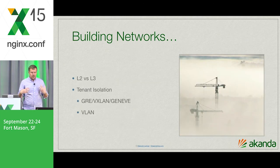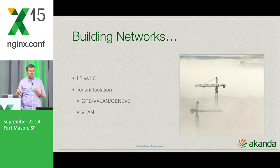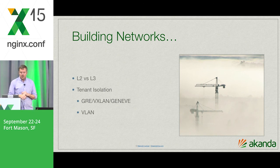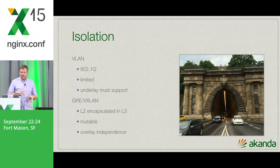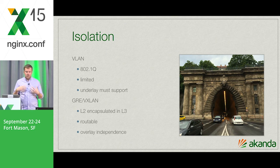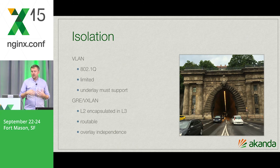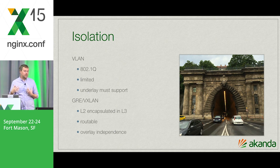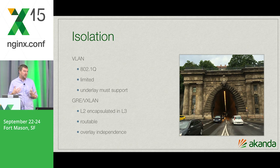OpenStack and Neutron in general allow you to build a number of different network topologies. You can consider layer two networks, but most people are building layer three centric networks — they're easier to manage and operate, and you don't run into the headaches of very large L2 domains. A lot of times they're supported with different types of isolation: GRE, VXLAN, GENEV. With VLAN, it's 802.1q, which requires a lot of setup and your underlay has to be aware of how VLANs are allocated. With Neutron you'll often see flat deployments or deployments based on VXLAN or GENEV, where you encapsulate the L2 packet into layer three or four, and it's routable within your fabric.